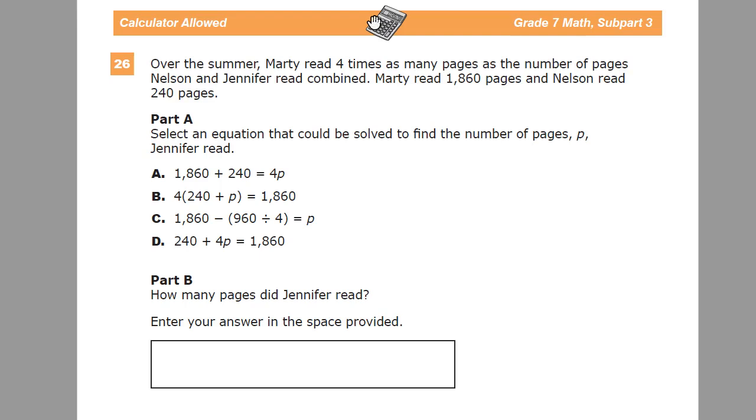The first thing I want to do is look at the statement given and make a generic version of it so that I can see where things are supposed to go. Marty read four times as many pages as the number of pages Nelson and Jennifer read combined. There's a kind of red flag here. You see four times and then later on you see an and statement. So you're doing four times a combination of two things. That almost always means parentheses is going to be somehow involved.